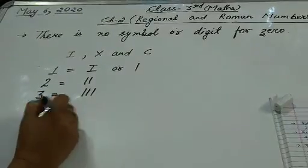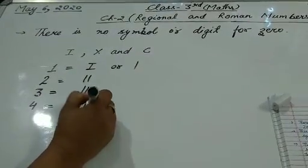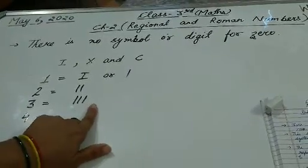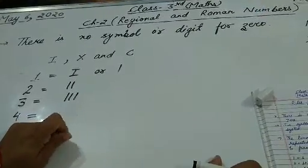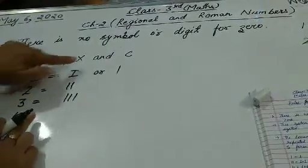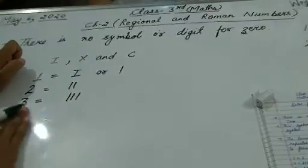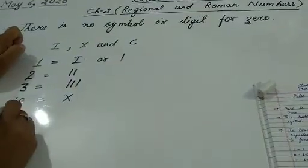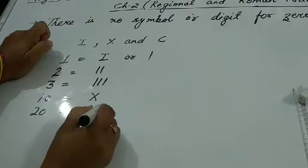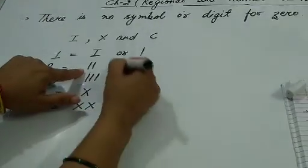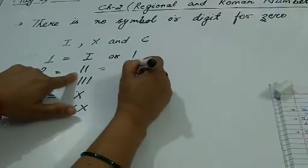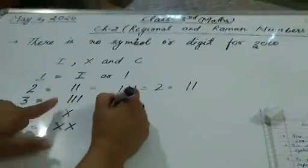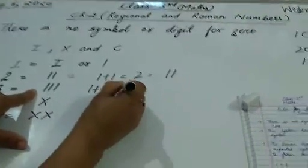Four — four को आप one, two, three, four ऐसे four sticks नहीं लगाओगे. Four के लिए Roman numerals में एक अलग है, वो हम next point में पढ़ेंगे. Then come to X — X means 10. For 20, if you have to write 20, X plus X — just like in one, one plus one is two, and one plus one plus one is three. So X plus X is 20.